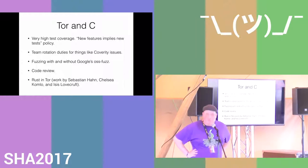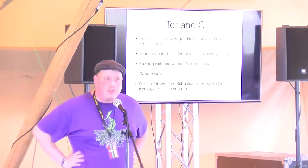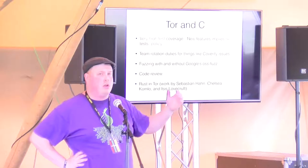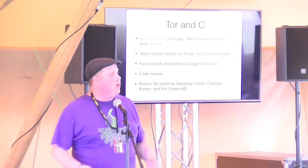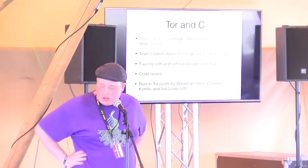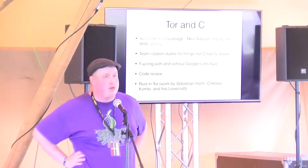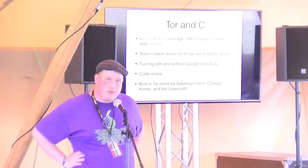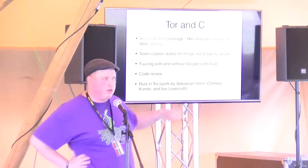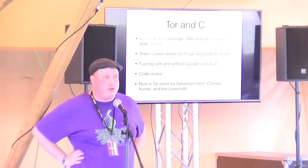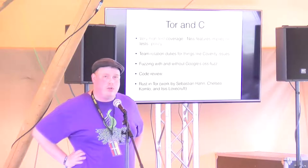Some really interesting work started at the last Tor developers meeting in Amsterdam earlier this year — there was a breakout session about third-party implementations, led by Chelsea. There were discussions around both a full rewrite like Tala and people who want to slowly change C Tor into something else. Sebastian, Chelsea, and Isis are actively working on integrating Rust into the C Tor project. There is Rust code already in the C Tor repository and you can build Tor with Rust enabled, using the Rust memory allocator as a test. New features going forward may be written in Rust instead of C.